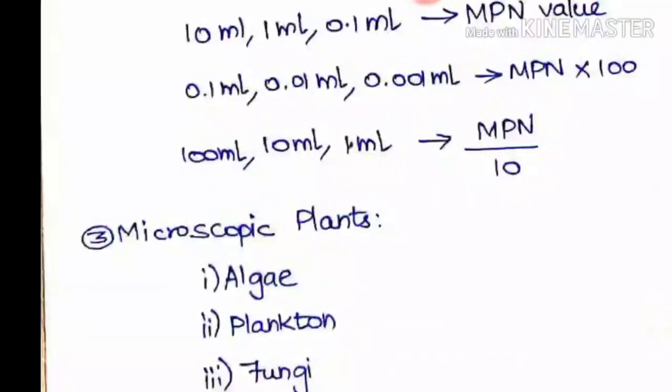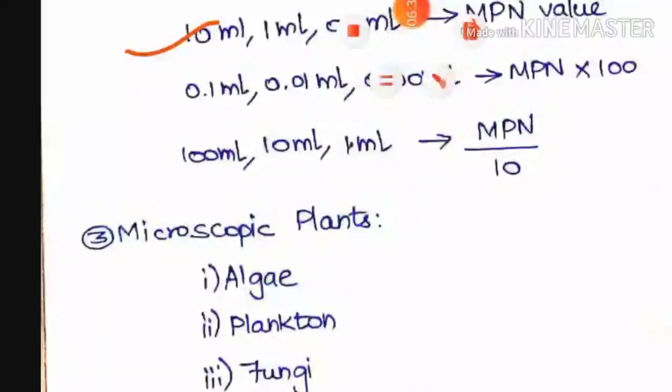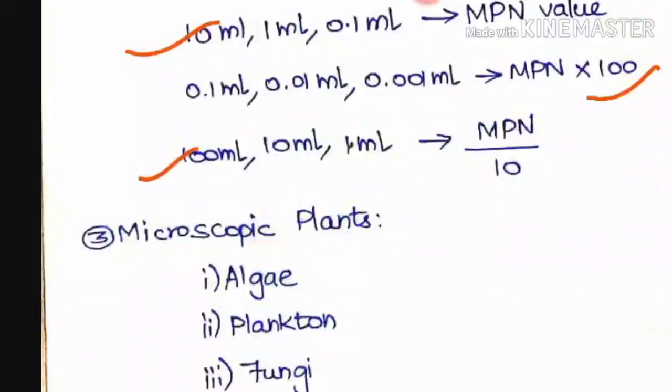If you're not getting positive results at all, you can go for lesser or higher dilution. For example, 10, 1, and 0.1 ml are standard MPN values. If you take 0.1, 0.01, and 0.001 ml - reduced 100 times - multiply the MPN value by 100. If taking 100, 10, and 1 ml - 10 times more - divide the MPN value by 10.